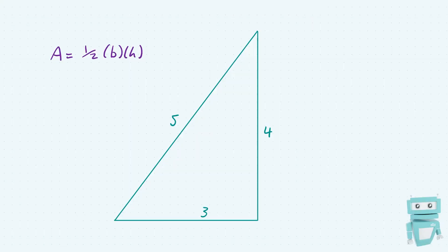Here we have the exact same triangle from a different perspective. This time our base is going to be equal to 3 and our height is going to be equal to 4. So our expression for the area becomes a half times 3 times 4. Multiplying the half into the 4 gives us 2 times 3, which is once again 6. That is our area for the triangle taken from this perspective.